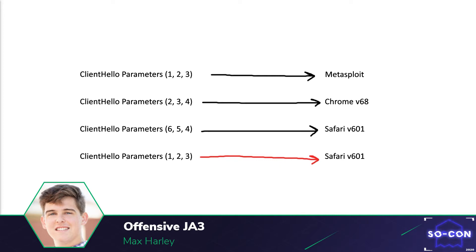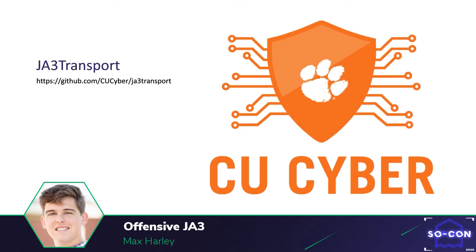Another example use case of JA3 that I really like — which relates more to quality of service instead of security — is finding the JA3 signature of the Python requests library to find all instances of users attempting to programmatically snipe items from an online store, since most sniping software is made with Python.